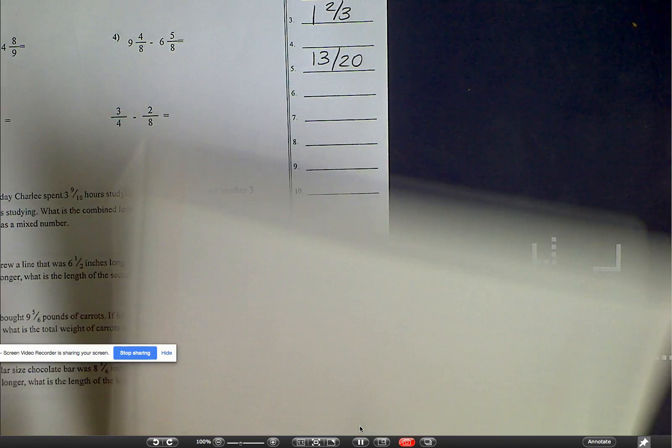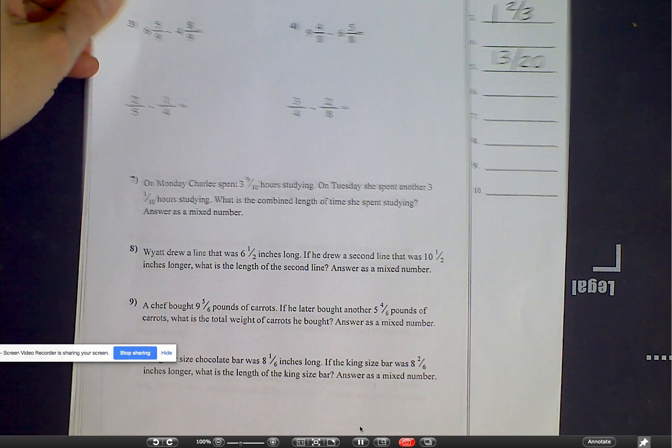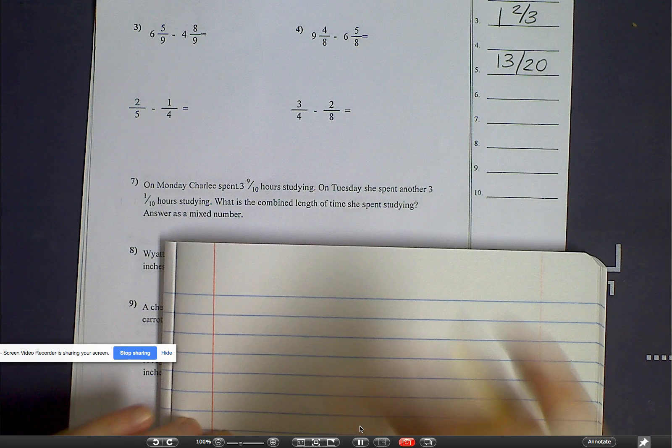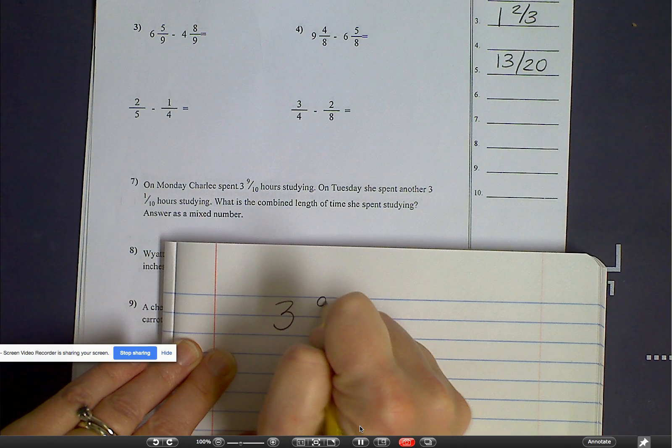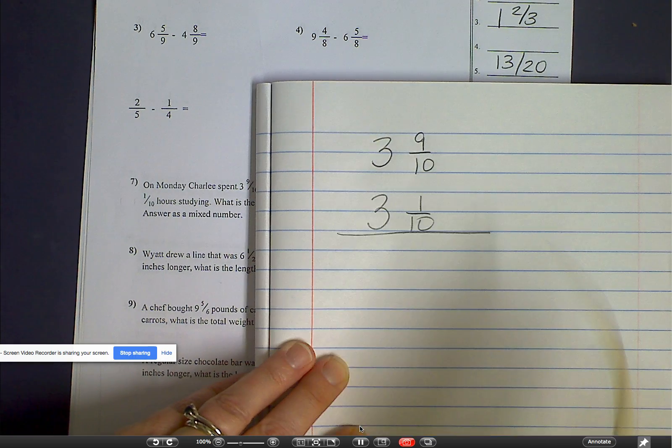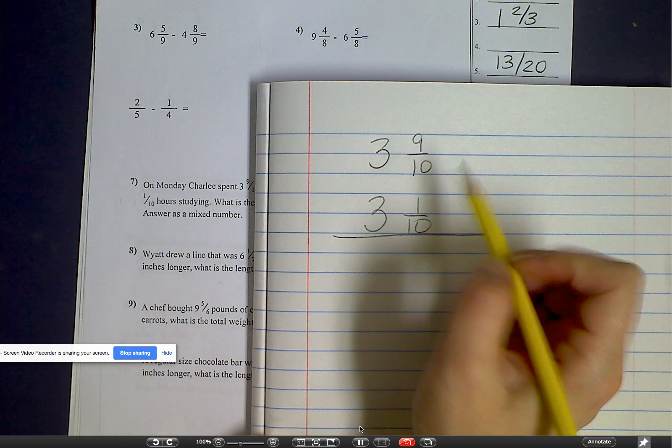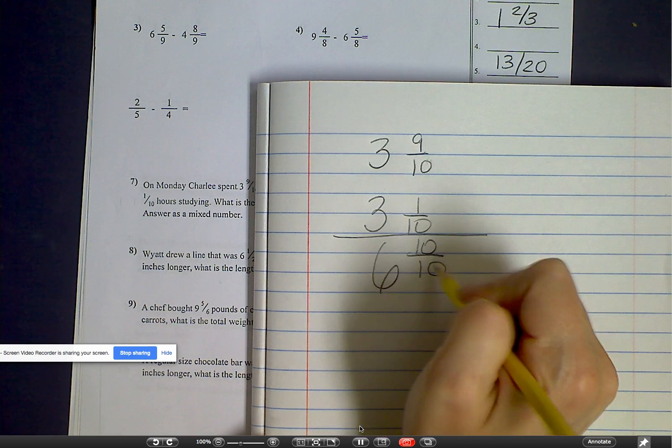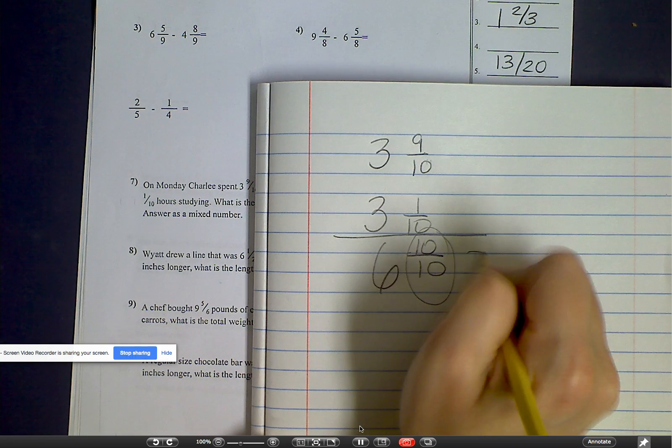Number seven. On Monday, Charlie spent three and nine-tenths hours studying. On Tuesday, she spent another three and one-tenths hours studying. What is the combined length of the time she spent studying? So we're saying she studied three and nine-tenths hours, and then she studied three and one-tenths hours. So nine plus one is ten over ten, because it's the same denominator, and then we have six.